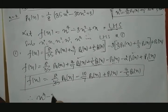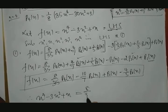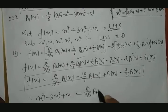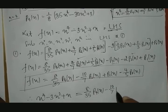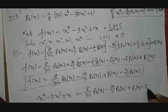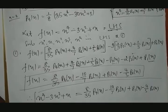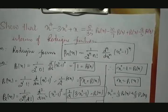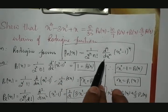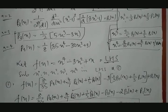Therefore the final result is: x⁴ - 3x² + x = (8/35)P₄(x) - (10/7)P₂(x) + P₁(x) - (4/5)P₀(x). The same example may be solved using the Legendre polynomial approach — it makes no difference. Instead of writing the Rodrigues formula, you write the Legendre formula; the values and calculations remain the same. Thank you.